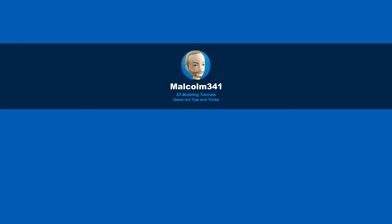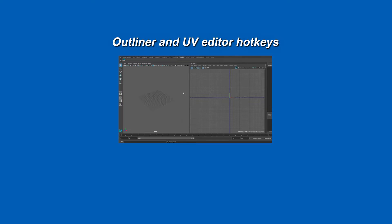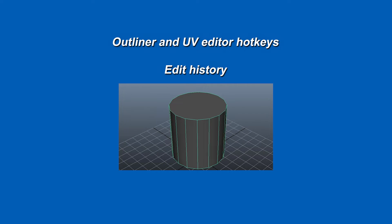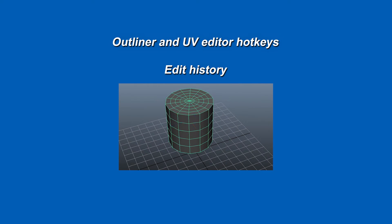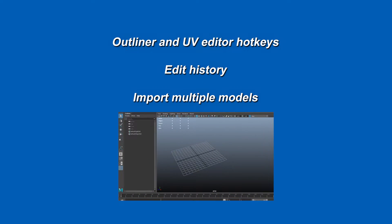Hey, this is Malcolm341. In this video we're gonna look at some Maya modeling tricks and secrets. Today we're gonna look at toggling the outliner and UV editor on hotkeys, how to edit the history of an object after you've created it, and how to import multiple models into Maya with one click. So let's get into it.